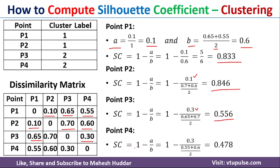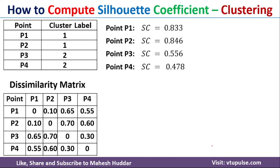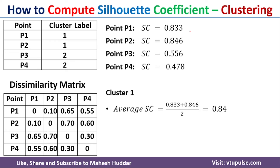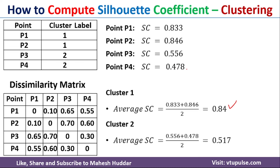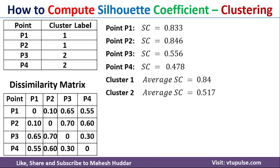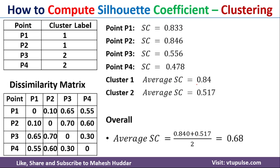Similarly, the silhouette coefficient for P4 is 0.478. Once we have the silhouette coefficient for each point, we can calculate the silhouette coefficient for each cluster by averaging the values of points in that cluster. For cluster 1, P1 and P2: 0.833 plus 0.846 divided by 2 equals 0.84. For cluster 2, P3 and P4: 0.556 plus 0.478 divided by 2 equals 0.517. Finally, the overall silhouette coefficient is the average of the cluster values: 0.84 plus 0.517 divided by 2, which equals 0.68.